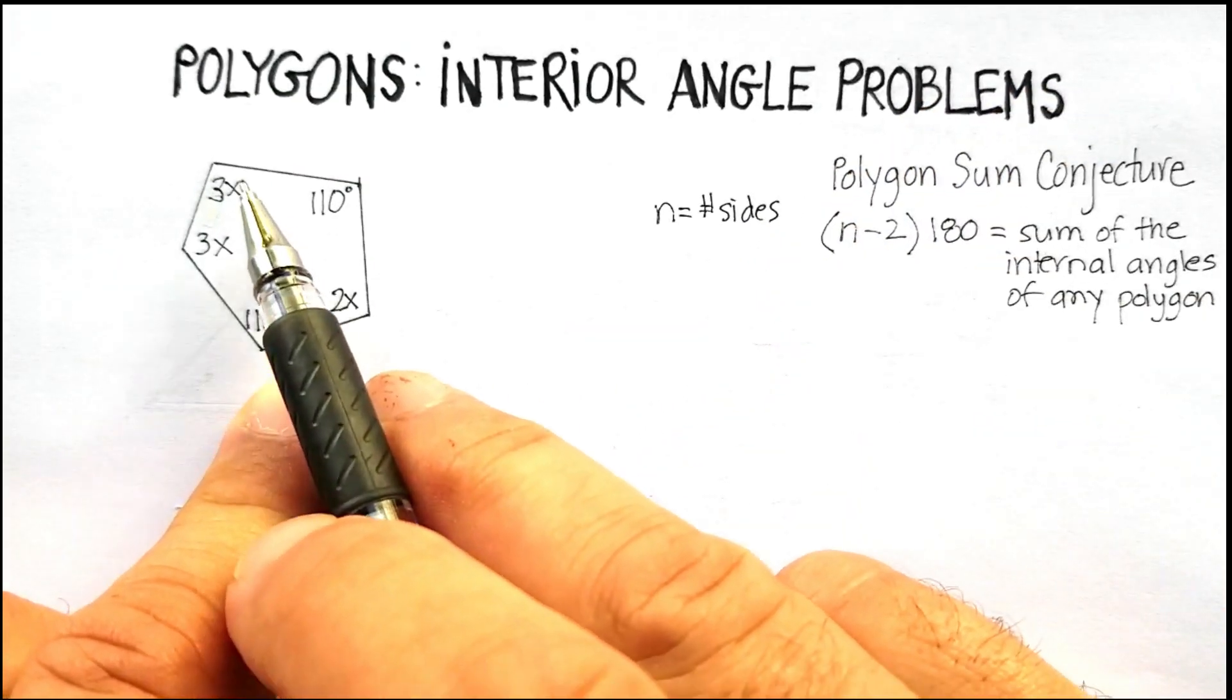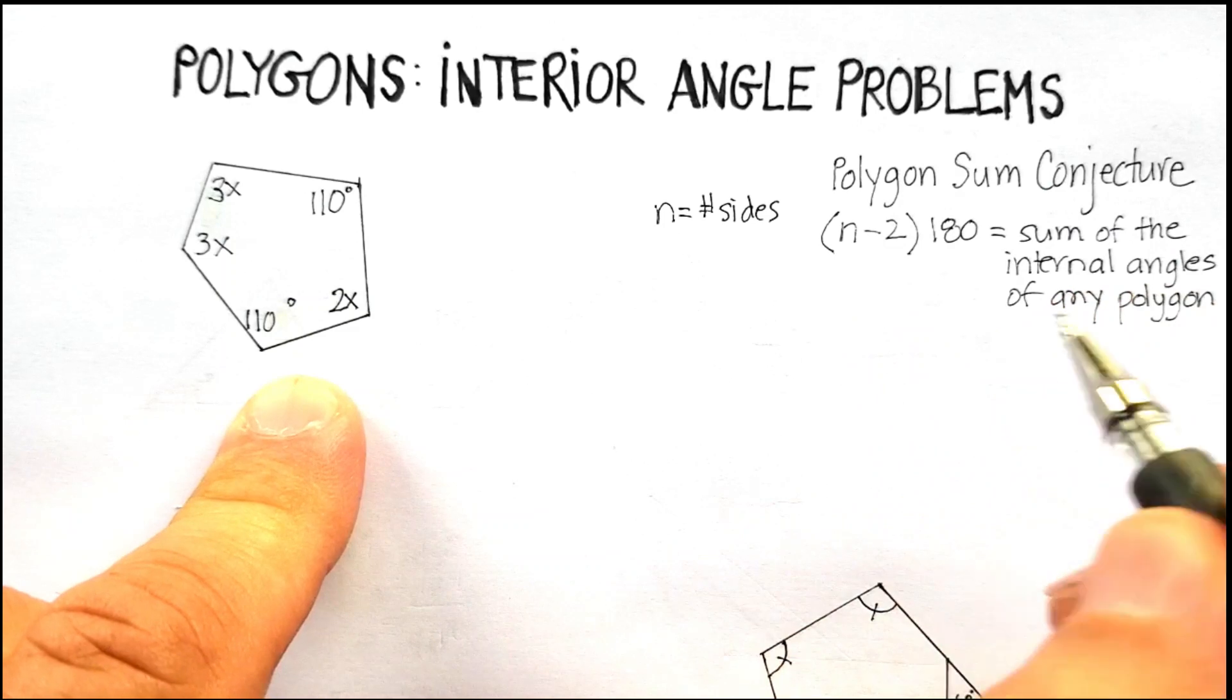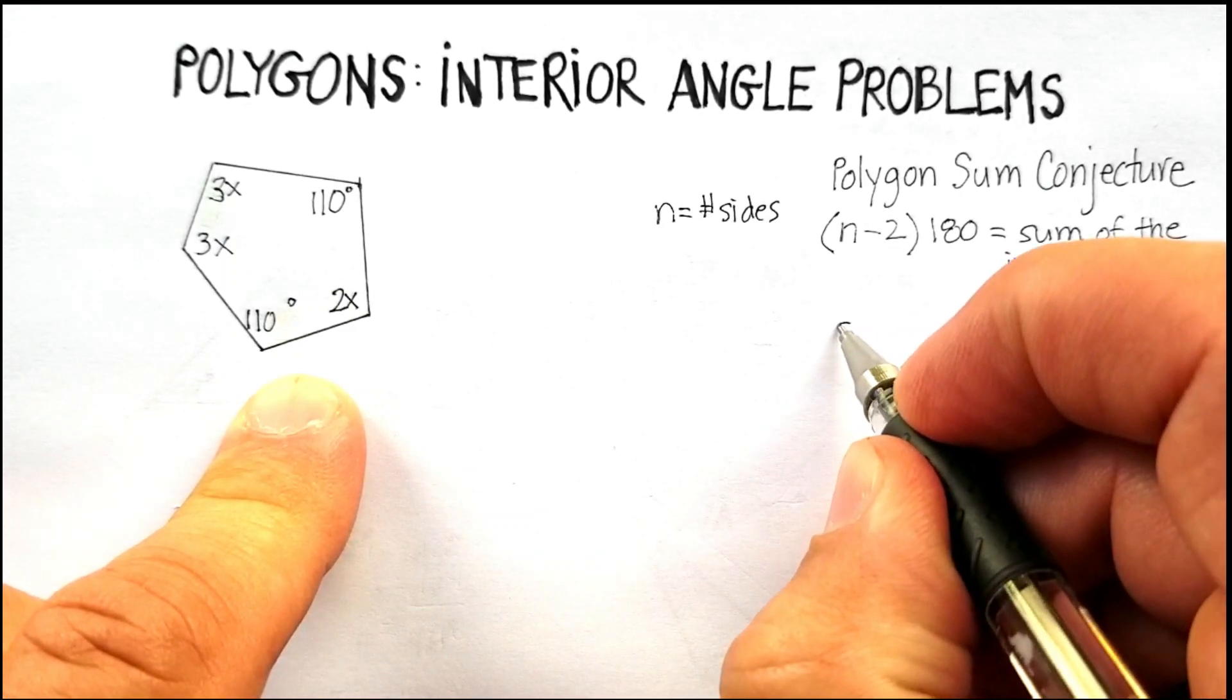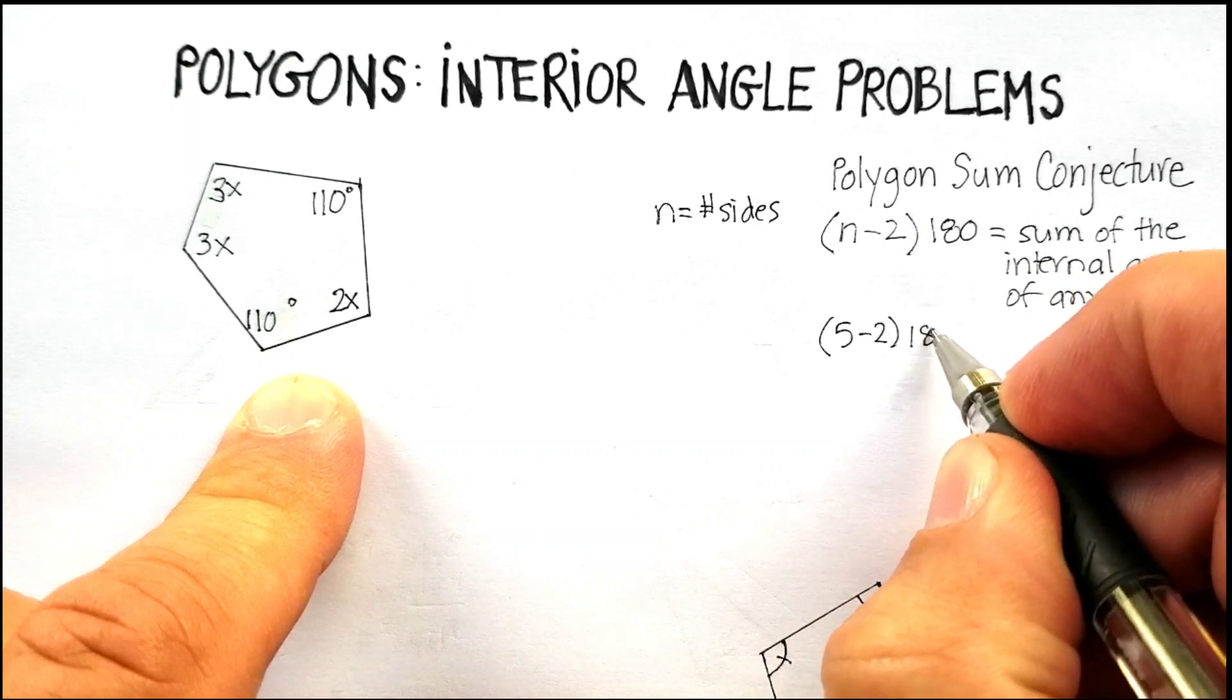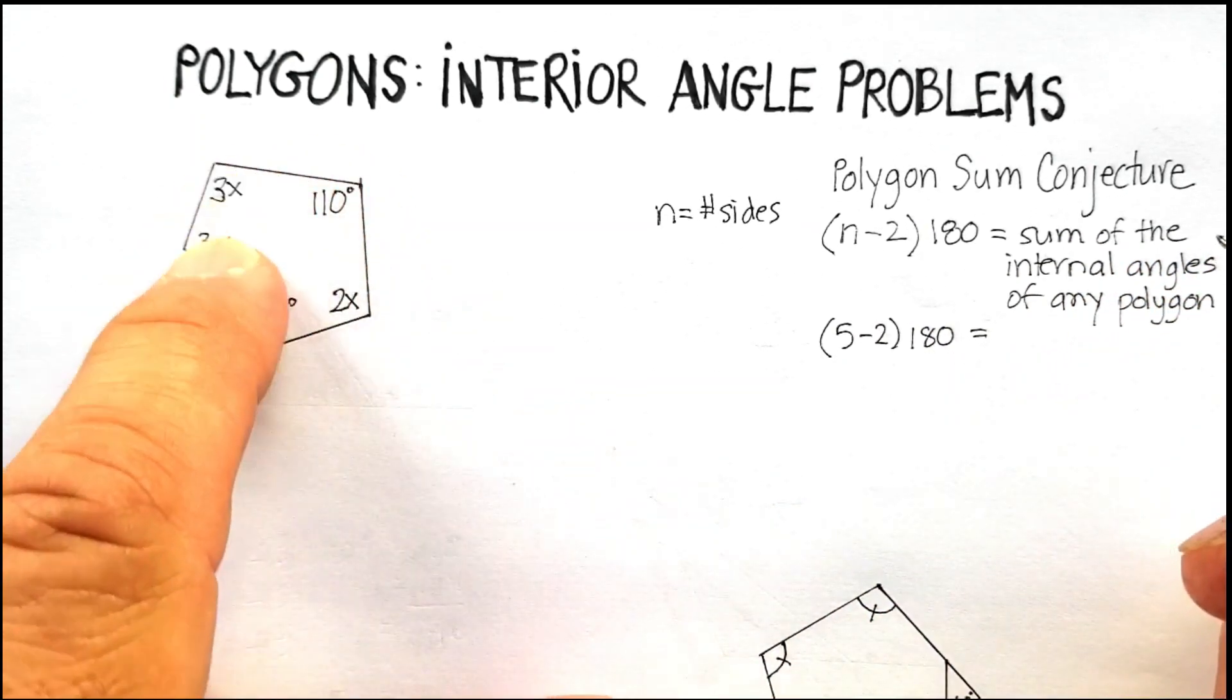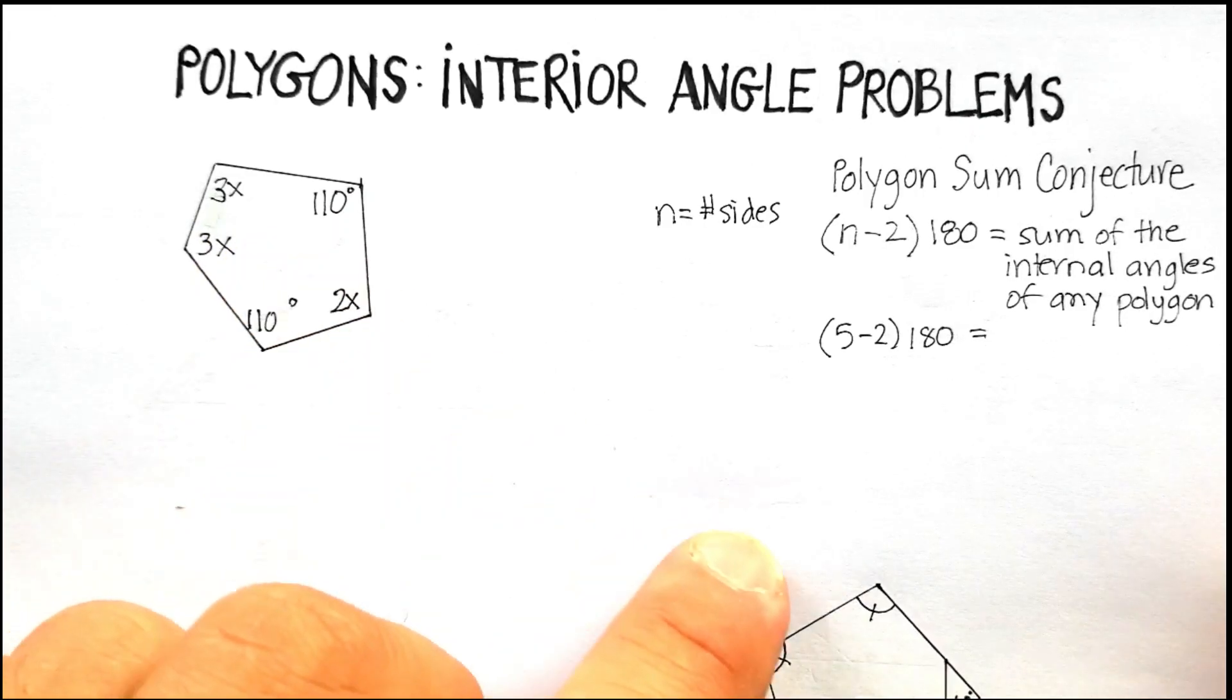So in this case, I have 1, 2, 3, 4, 5 sides. So I'm going to put 5 minus 2 times 180, and that should equal the sum of all of those internally.